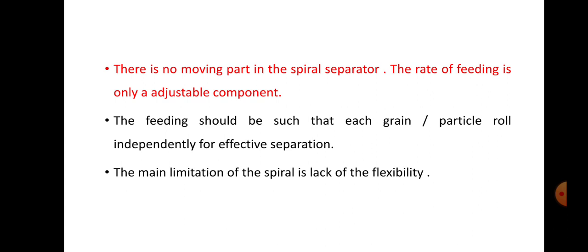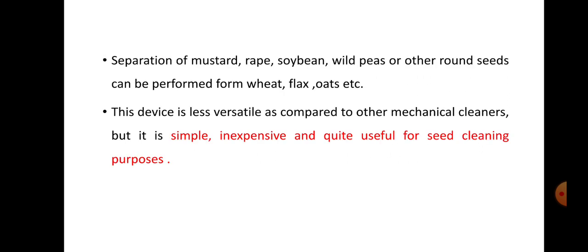The feeding should be such that each grain or particle rolls independently for effective separation, meaning every particle of the mixture should get a chance to contact the surface of the helix so that, according to its roundness, it picks up motion. The main limitation of the spiral separator is lack of flexibility. It can separate round seeds such as mustard, grape, soybean, and wild peas from non-round seeds like wheat, flax, and oats. It is a less versatile device compared to other mechanical cleaners, but from an economic point of view it is simple, inexpensive, and quite useful for seed cleaning in rural areas.